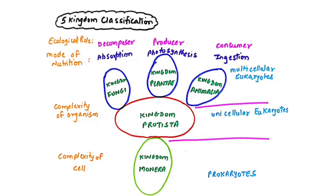Kingdom Monera includes all prokaryotes, where a single cell without a nucleus performs all functions. From Monera evolved Kingdom Protista — unicellular eukaryotes where a single cell performs all activities. Some Protists showed fungus-like characteristics, giving rise to Kingdom Fungi. Some showed plant-like characteristics, giving rise to Kingdom Plantae. Some showed animal-like characteristics, giving rise to Kingdom Animalia. So Kingdom Protista is the most important kingdom as it gave rise to three different kingdoms.